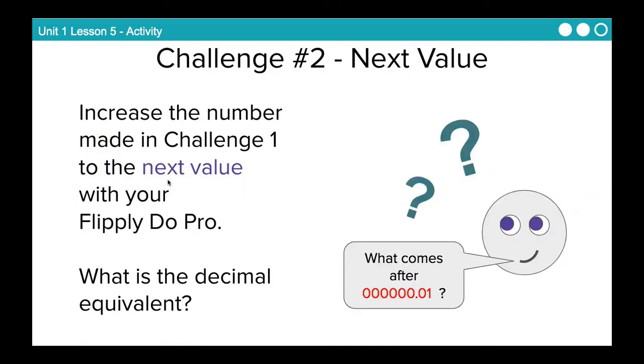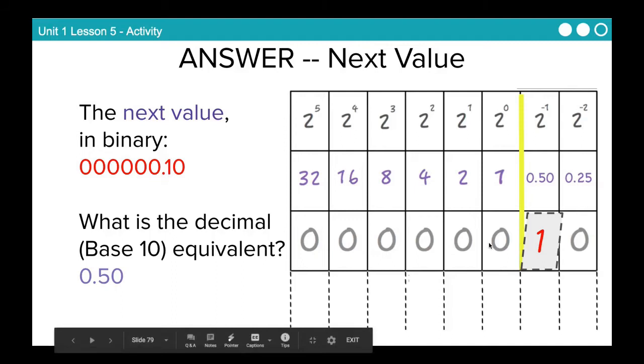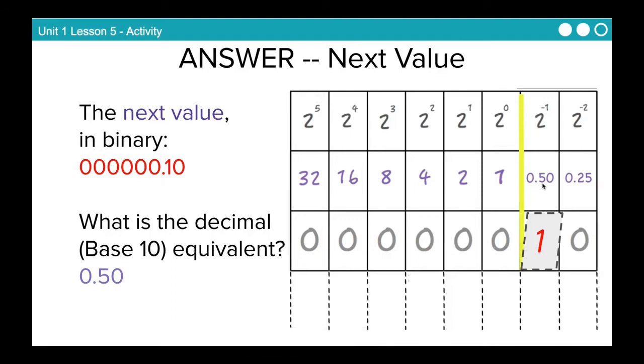Next challenge. I want you to increase the number that you made in challenge one to the next value with your Flippy-Doo Pro, and then figure out what the decimal equivalent to that is. So pause the video. And again, write this answer down in your journal. So to make the next value, we would move to the next space and flip that one up. So the next value in binary is 0-0-0-0-0-0-1-0. And the decimal equivalent, of course, is 0.5, or 0.50.